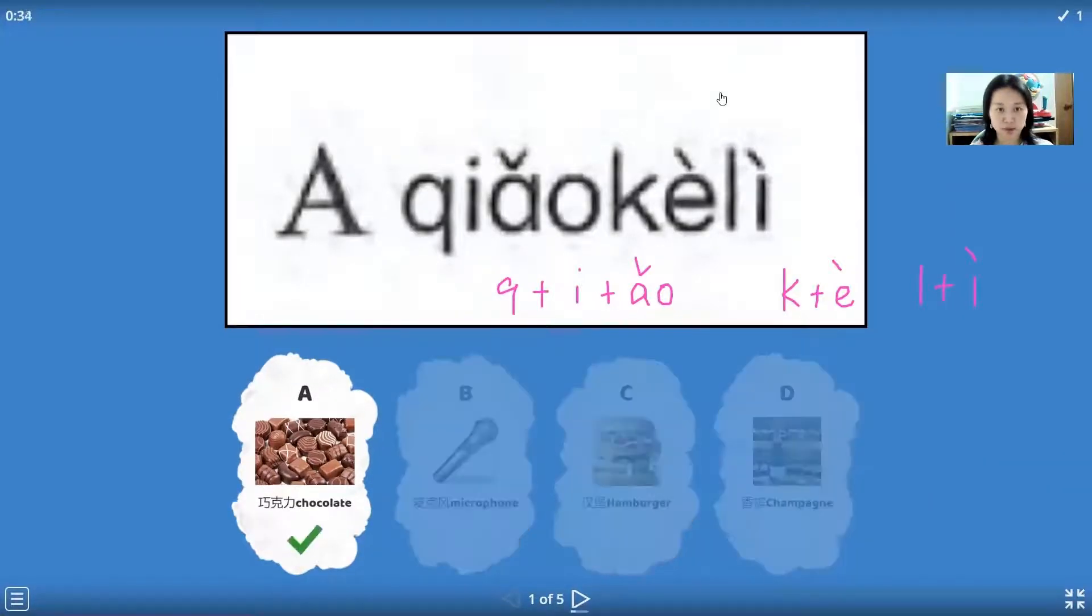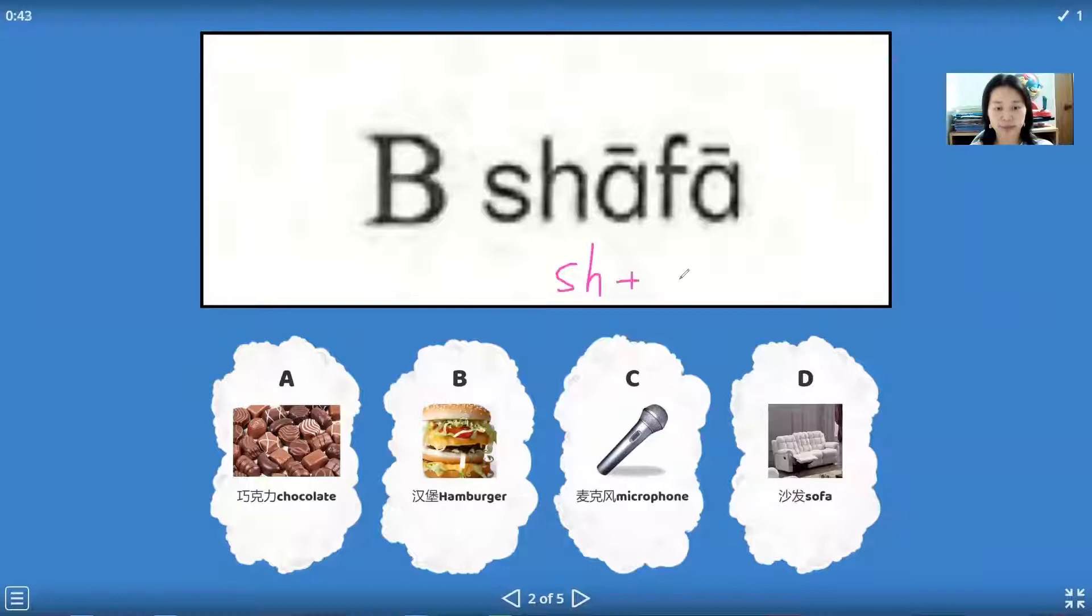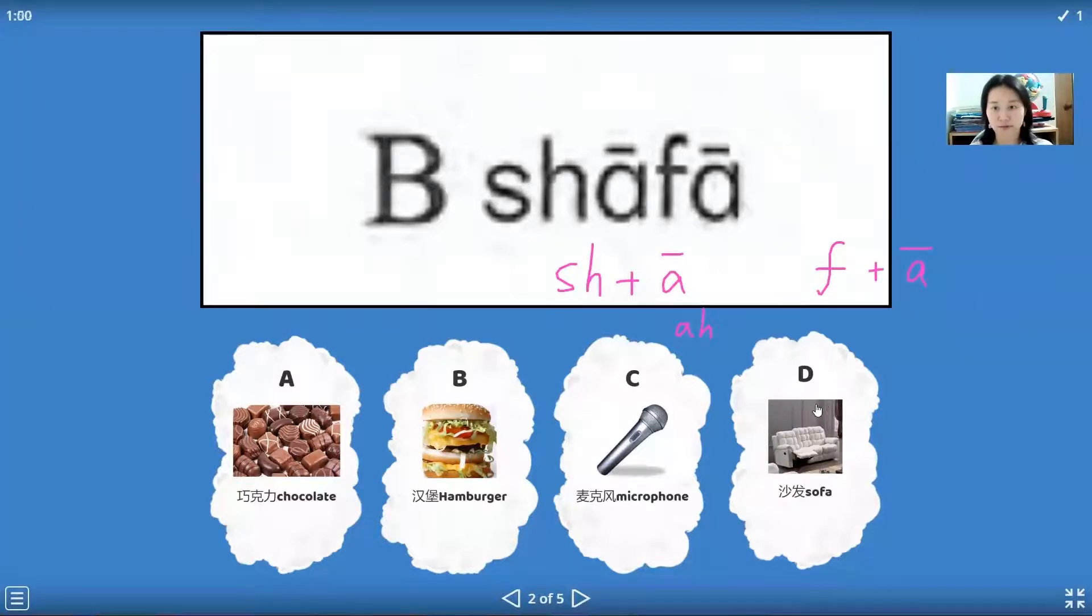Next one, the word is shi, curl the tongue. Shi, shi. And this a, just like we say in English, this a. And the shi a, sha. And this one is fo, fo, a, fa. Sha fa, shafa is sofa.